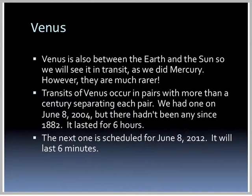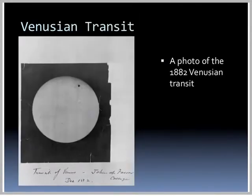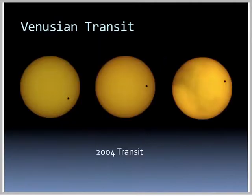Venus is also between the Earth and the Sun, so we see it in transit as we did with Mercury. However, transits of Venus are much rarer — they occur in pairs with more than a century separating each pair. We had one on June 8, 2004, but the previous one was in 1882, and it lasted 6 hours. The next one happened on June 8, 2012, and lasted 6 hours. A photo of the 1882 Venusian transit shows Venus as a black spot moving across the Sun, and pictures of the 2004 transit show the same.